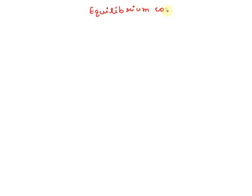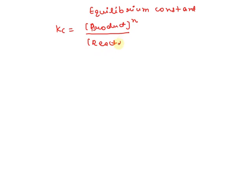Hello students, let's begin with this question. This question is based upon the equilibrium constant expression. Generally, the equilibrium constant Kc is the ratio of the concentration of the products raised to the power of their number of moles, upon the reactants raised to the power of their number of moles.